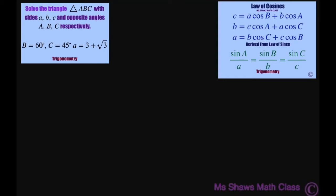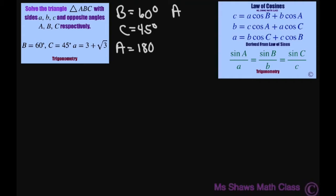Let's write what we have. Angle B is 60 degrees, angle C is 45 degrees. That means angle A equals 180 degrees minus 60 degrees plus 45 degrees. This one is simple enough — you could probably do it in your head. Angle A is going to be 75 degrees. So now we're just left with getting the other two sides, b and c.